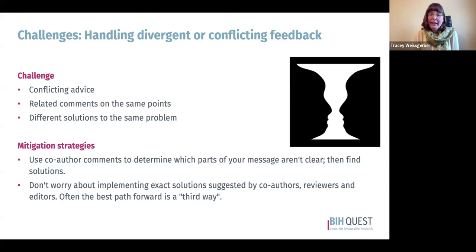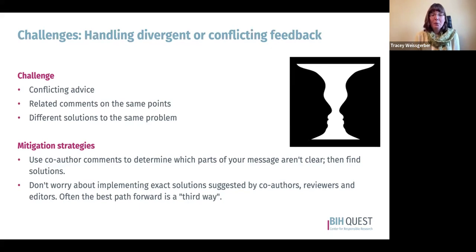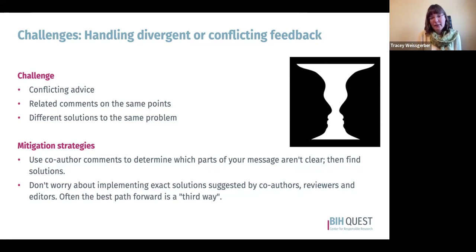Handling divergent or conflicting feedback is always an issue. Sometimes authors reach consensus; sometimes they don't. Use co-author comments as a general indication of which parts of your message aren't clear. Comments about particular solutions may not be as useful, since people aren't used to writing this type of paper. Focus on using comments to figure out what isn't clear. Don't worry too much about implementing exact solutions as suggested — there's often a third way that addresses the underlying problem differently from all proposed solutions.